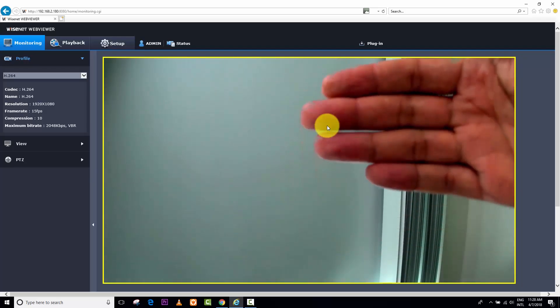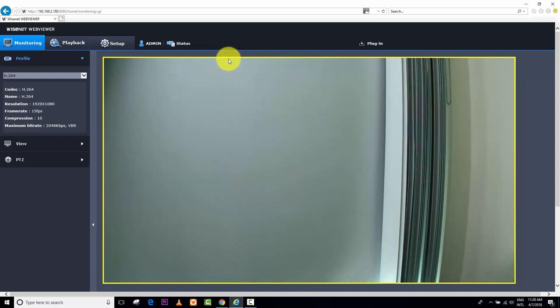You can also see there is a yellow square. This yellow square is showing that there is some movement in front of the camera. The camera has motion detection feature so I can see that's moving here.